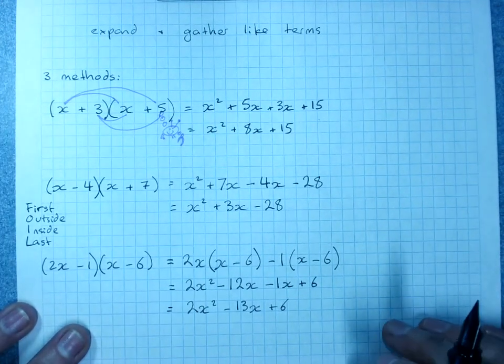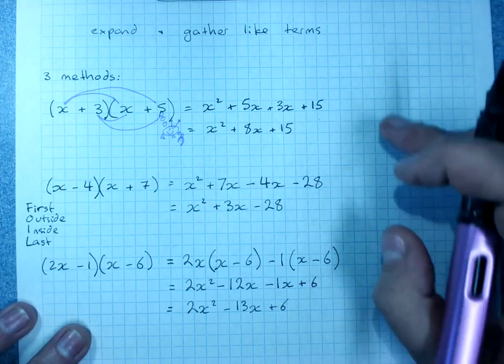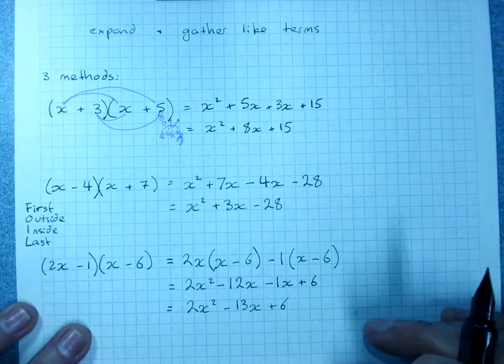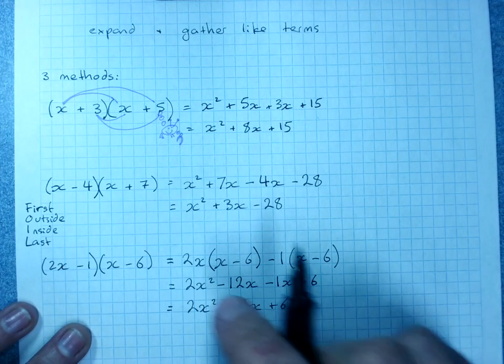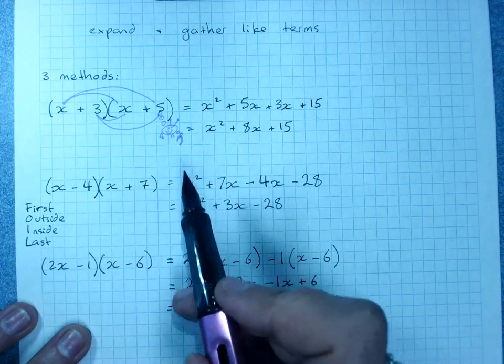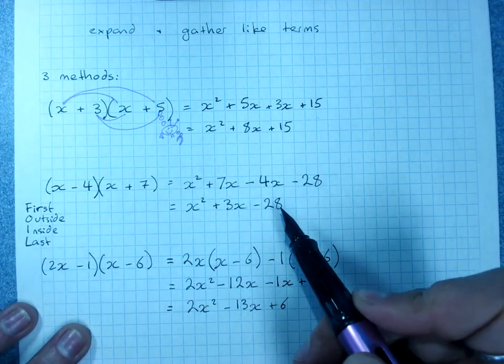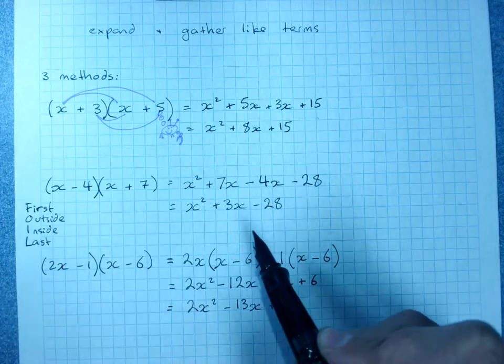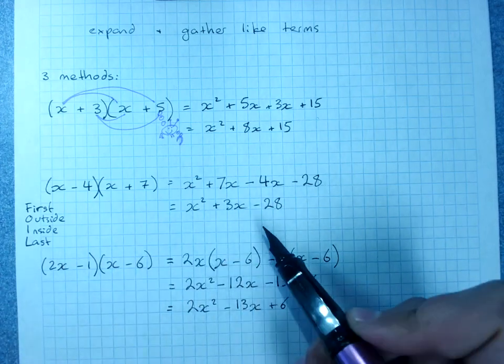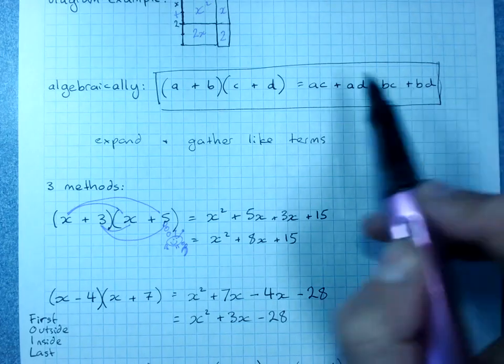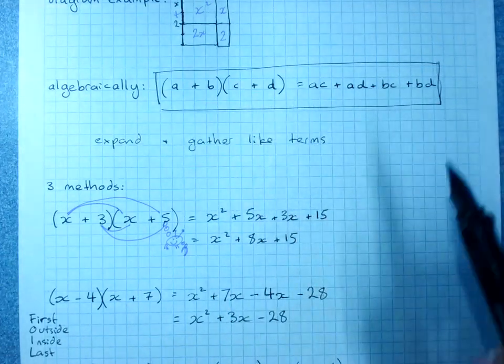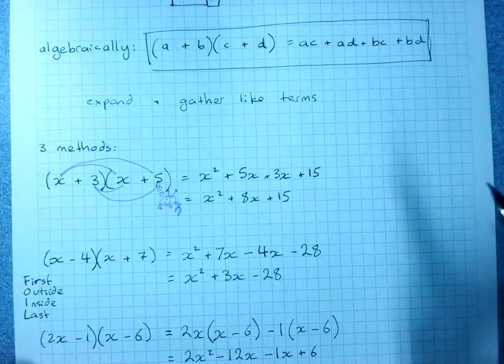Totally up to you which method you use. I'd try all of them a few times and work out which is best for you. You do have to show at least one line of working, write the question, give me a line of working and the simplified like terms gathered answer if there's anything to gather. In this one there was nothing we could gather, there were no like terms, so question and answer is fine but you must give me that as a minimum.